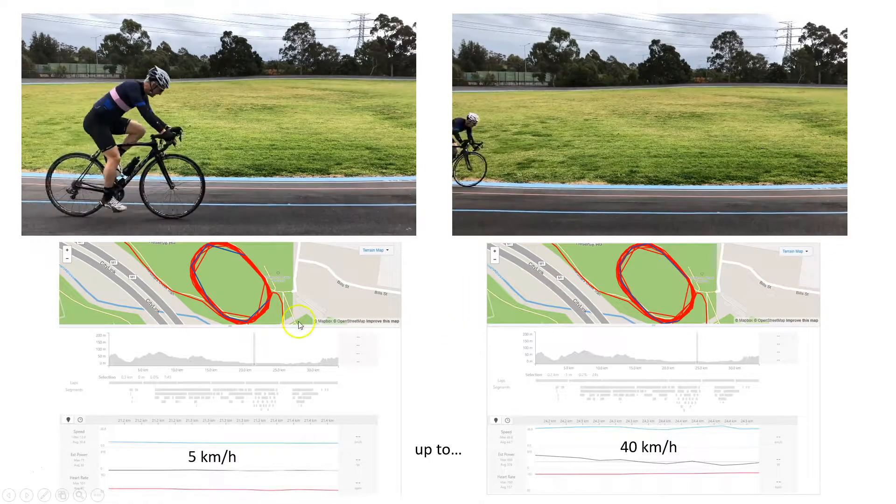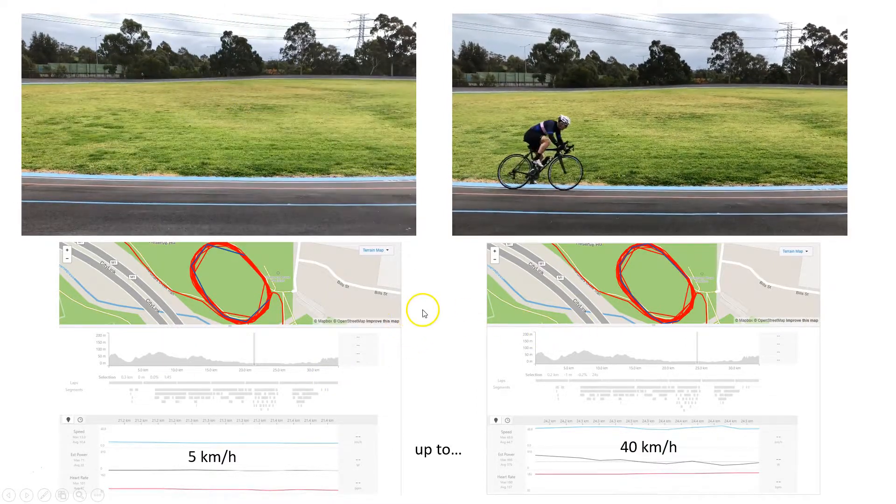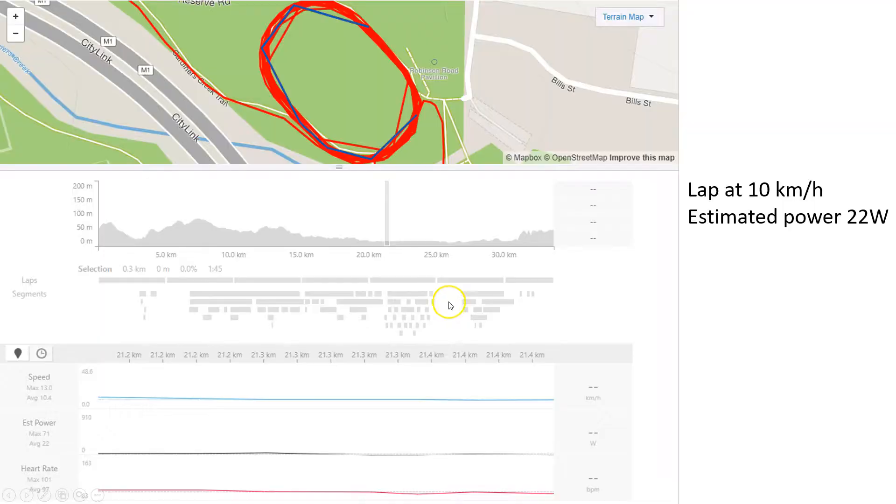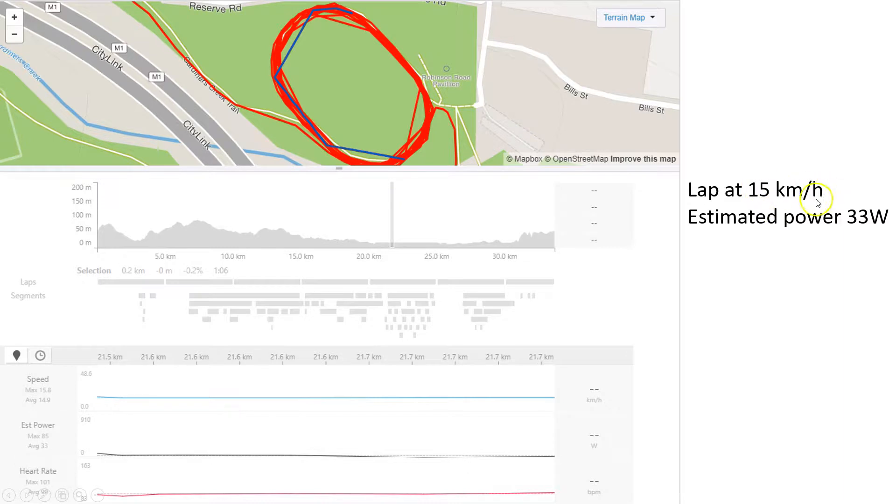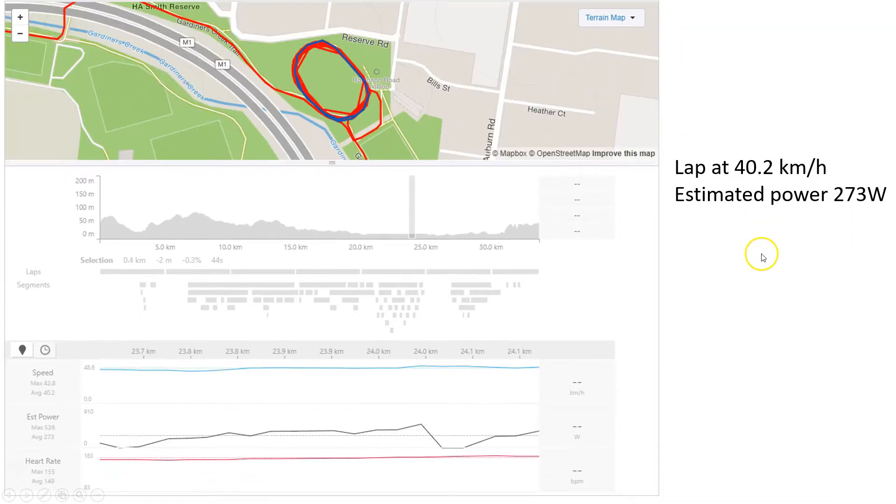So I did some laps at 5 kilometers an hour at increasing intervals up to 40 kilometers an hour. Let's have a look at some of those data. This is what Strava has. So this was my 10 kilometers an hour and Strava has estimated my average power output at 22 watts for that lap, at 15, 33 and so on. So I took various data and then here's a summary.